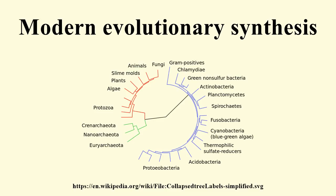In this and subsequent papers, culminating in his 1930 book The Genetical Theory of Natural Selection, Fisher was able to show how Mendelian genetics was, contrary to the thinking of many early geneticists, completely consistent with the idea of evolution driven by natural selection. During the 1920s, a series of papers by Haldane applied mathematical analysis to real-world examples of natural selection, such as the evolution of industrial melanism in peppered moths. Haldane established that natural selection could work in the real world at a faster rate than even Fisher had assumed.